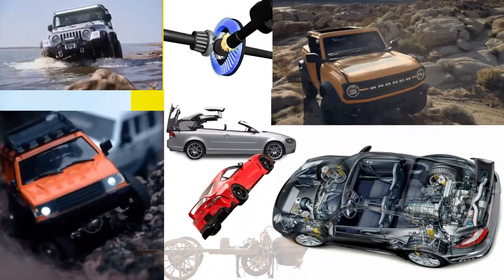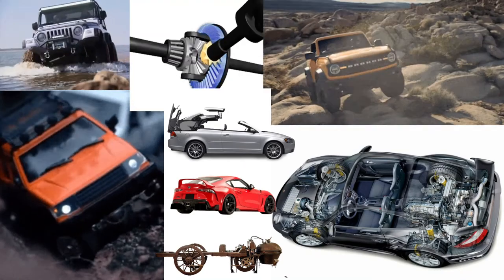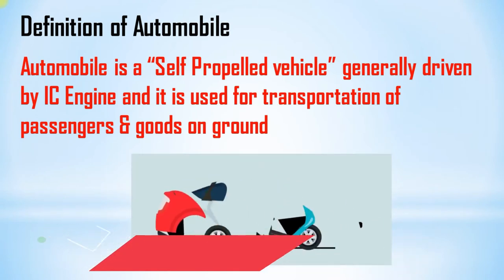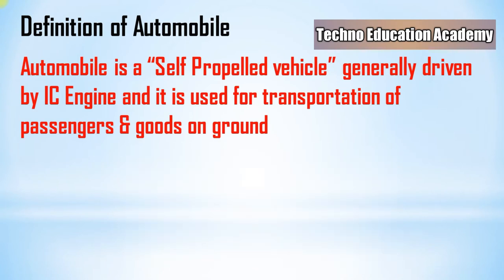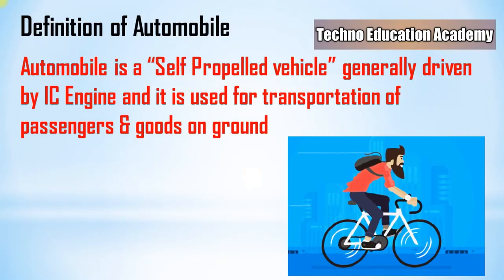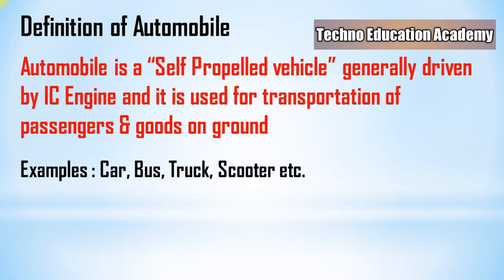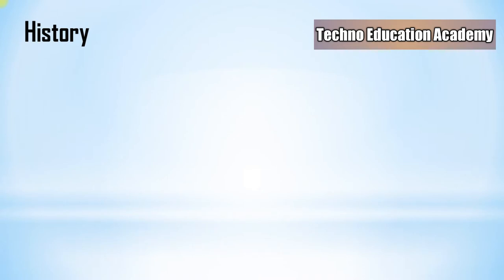Hi, this is Vijay. In this video lecture we will discuss the classification of automobile. First of all, what is automobile? Automobile is a self-propelled vehicle, generally driven by an IC engine, and it is used for transportation of passengers and goods on ground. For example, a bicycle requires manual effort to propel it, so it is not in the category of automobile. Examples include car, bus, truck, and scooter.